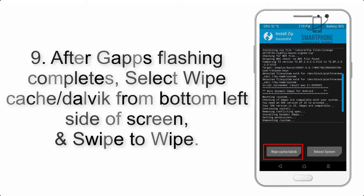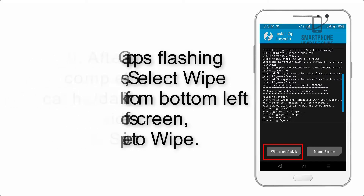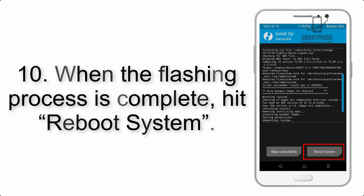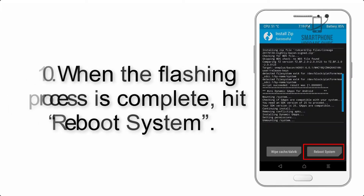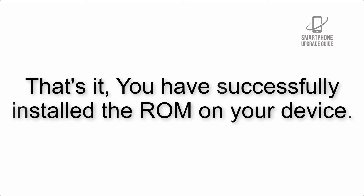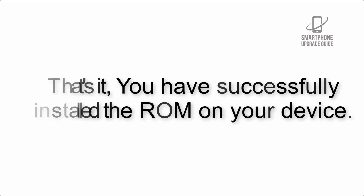Step 9: After GApps flashing completes, select Wipe Cache and Dalvik from the bottom left side of the screen and swipe to wipe. Step 10: When the flashing process is complete, hit Reboot System. That's it — you have successfully installed the ROM on your device.